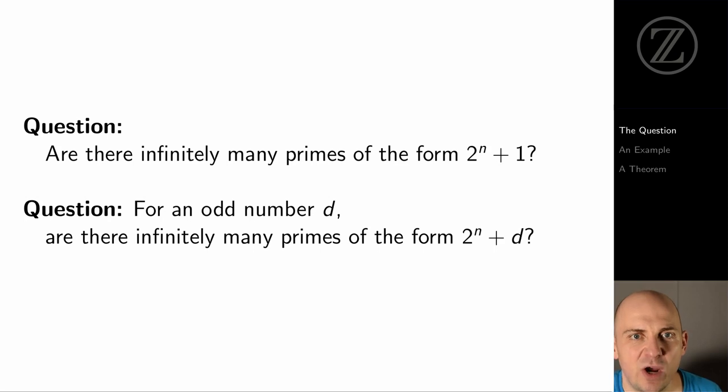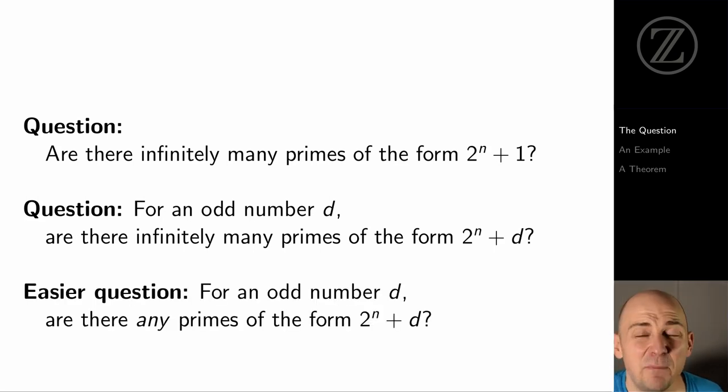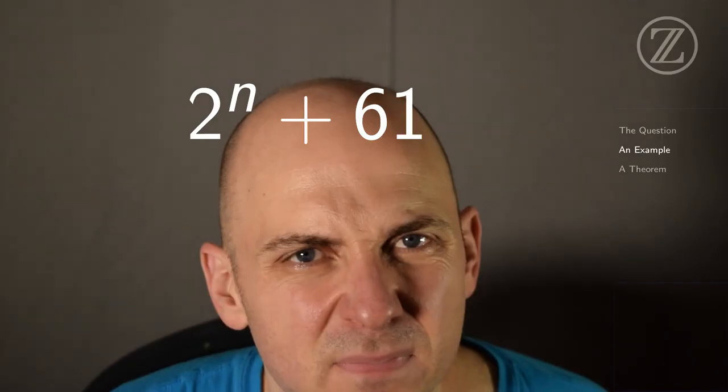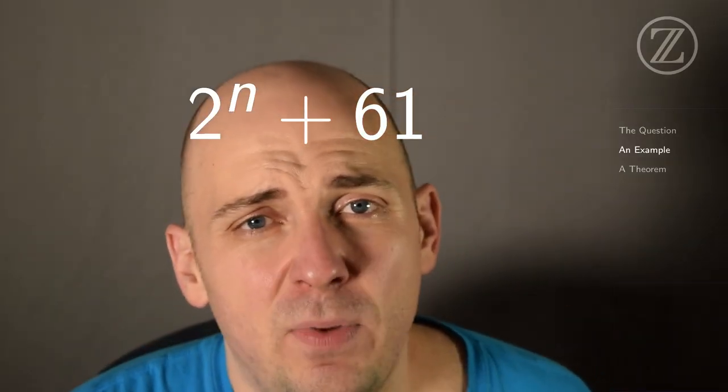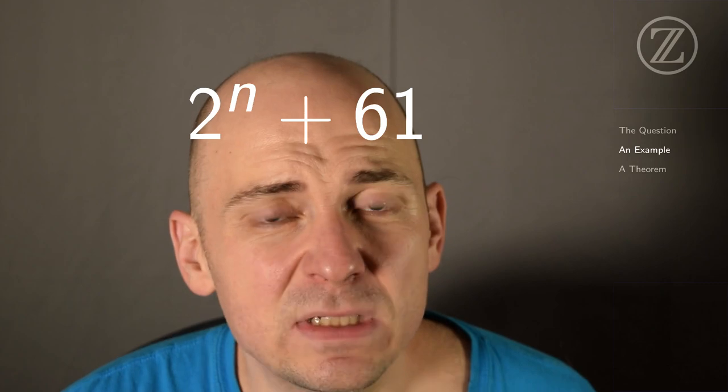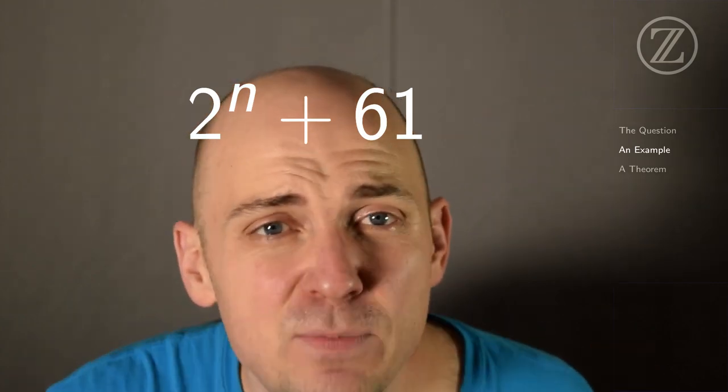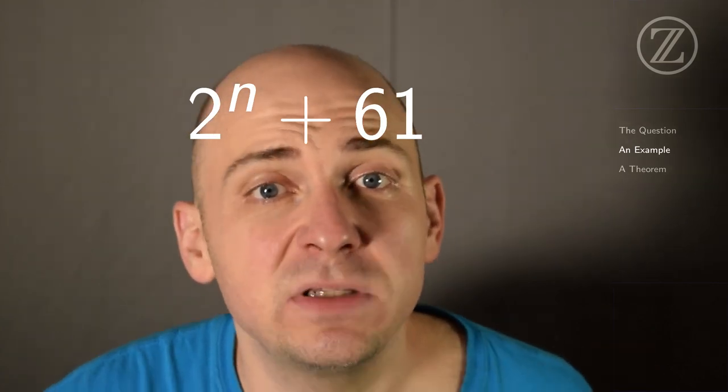So specifically, here's our question. For a given odd number d, are there infinitely many prime numbers of the form 2 to the n plus d? But that problem is really hard. So here's an even easier question. Let's just pick our favorite odd number d and ask, are there any primes of the form 2 to the n plus d? Let's work through a concrete example. Let's take a look at the number d equals 61 and see if we can find any primes of the form 2 to the n plus 61.